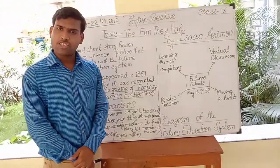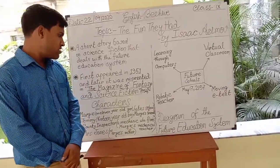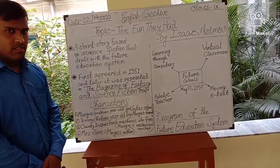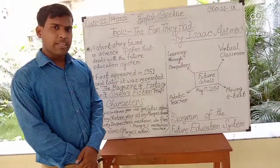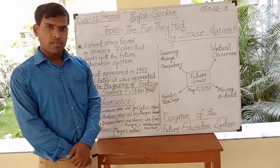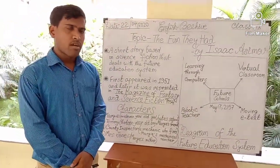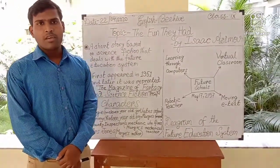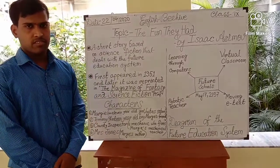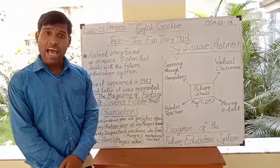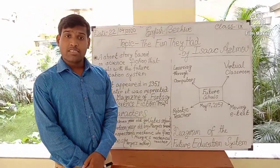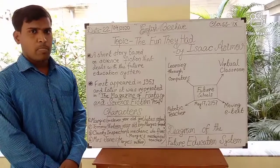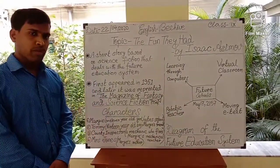When Margie entered her classroom, the robotic teacher had already started a mathematics lesson on proper fractions. But Margie had no interest in the lesson. She sat there thinking about the old book and the teaching methods of the past — the schools where children came together and learned from human teachers. Lost in these thoughts, the story ends here.